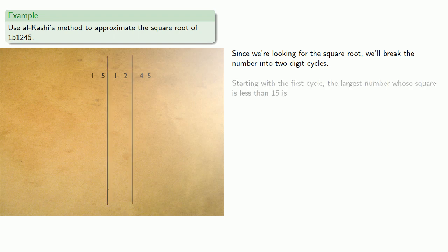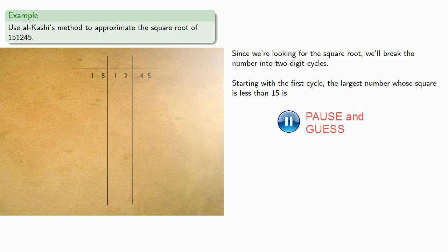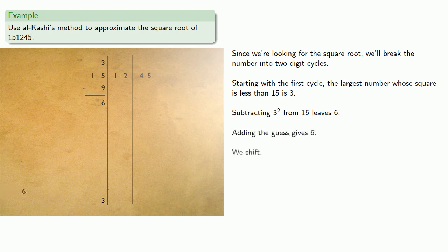Starting with the first cycle, the largest number whose square is less than 15 is 3. So we'll subtract 3 squared from 15, leaving 6. Adding the guess gives us 6, and we shift.